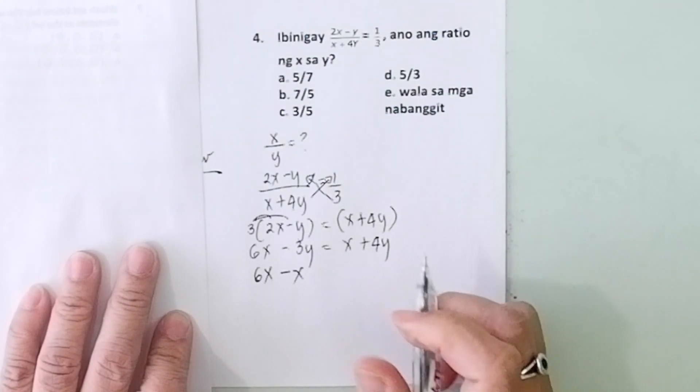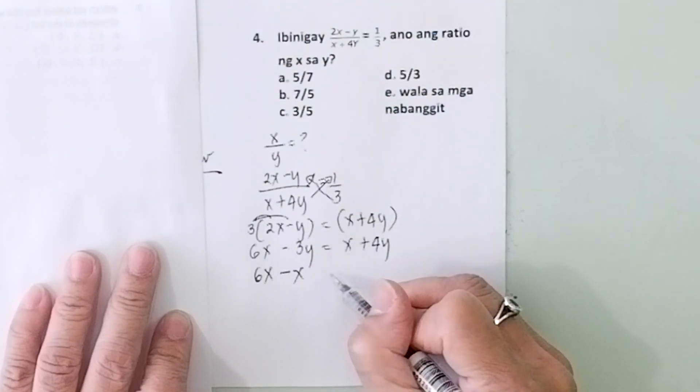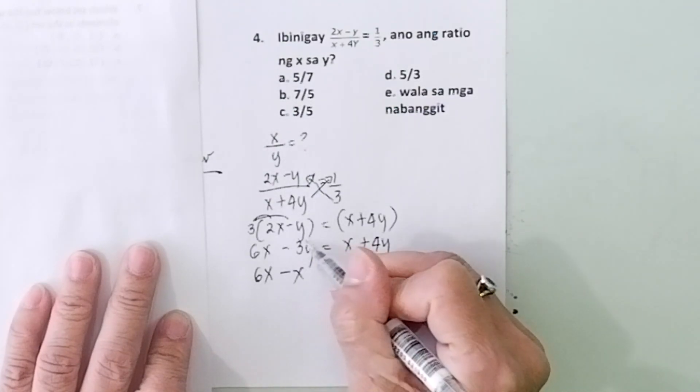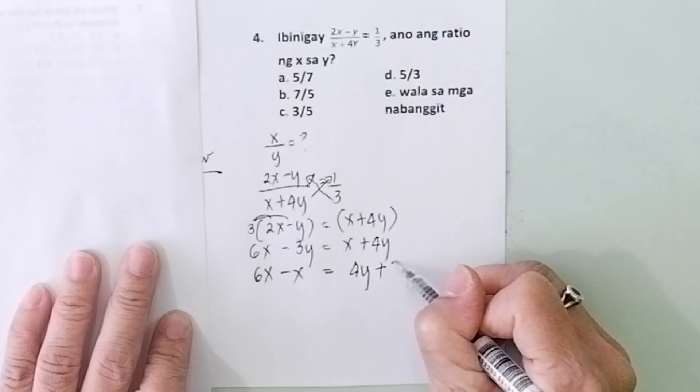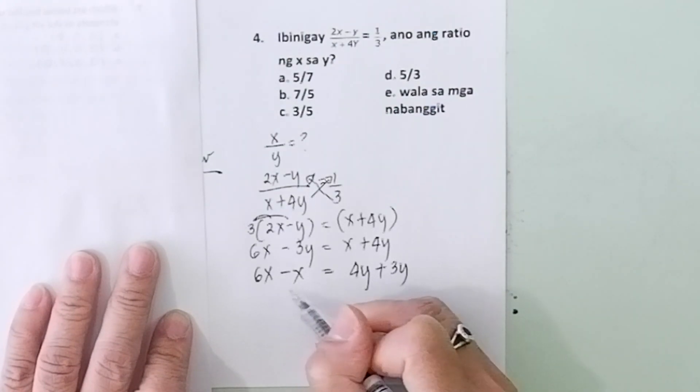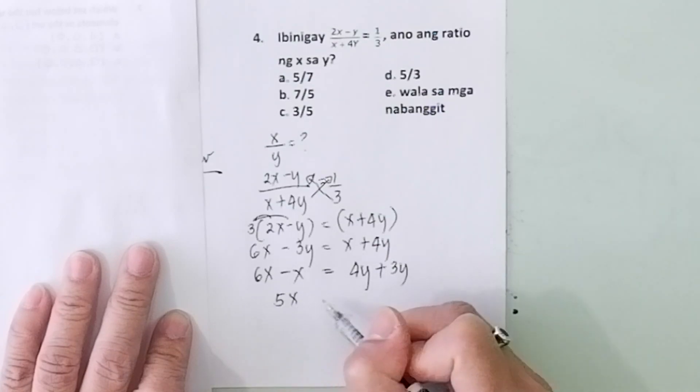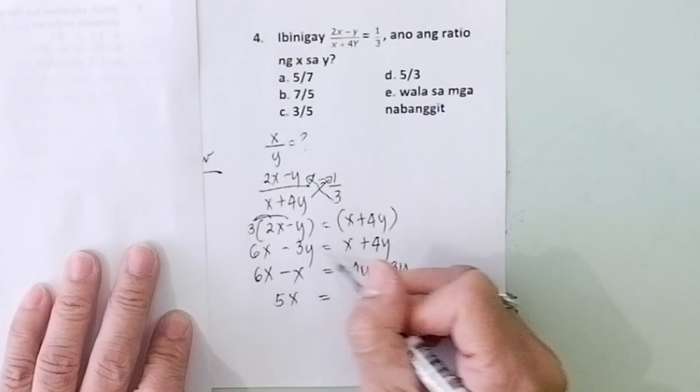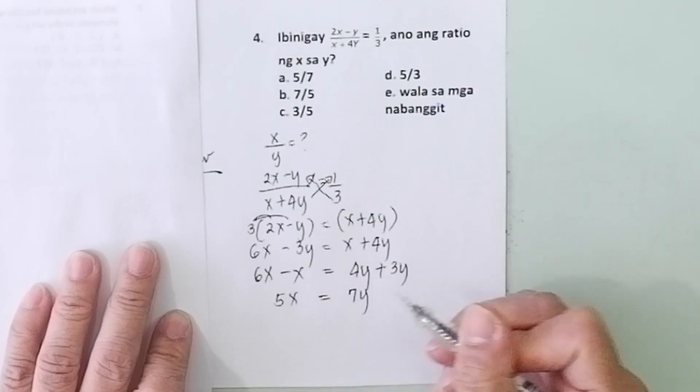Then combine all the x's on one side: 6x minus x. This one goes there, so it becomes minus 4y. Transpose negative 3y here, it becomes plus 3y. So you have here 5x equals 7y. Then stop.